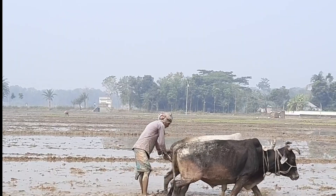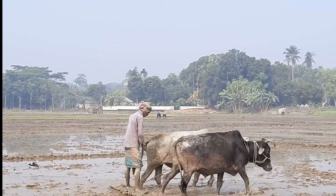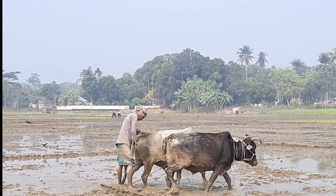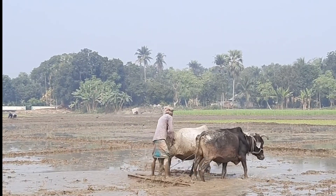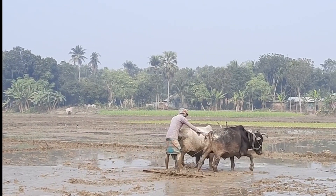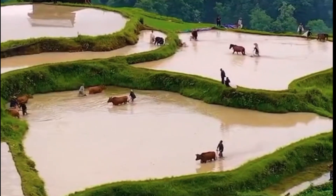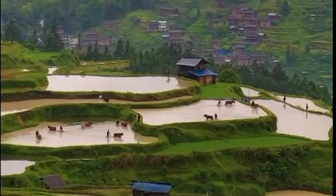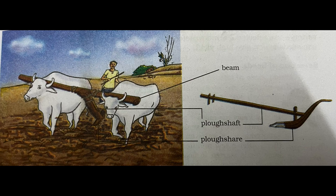The process of loosening and turning of soil is called tilling or ploughing, and this is done by using a plough. Ploughs are made of wood or iron. If the soil is very dry, it may need some watering before ploughing. The ploughed field may have big clumps of soil called crumbs, and it is necessary to break these. The main tools used for this purpose are the plough, the hoe and the cultivator.